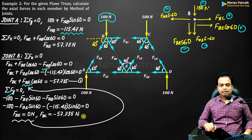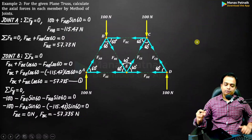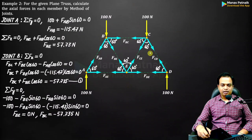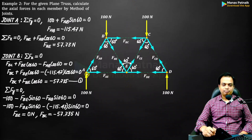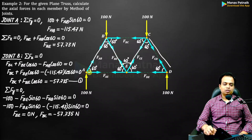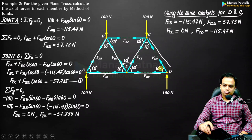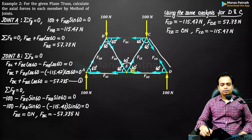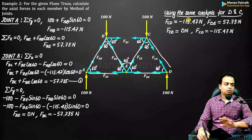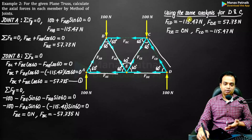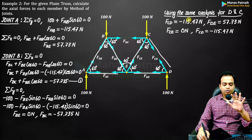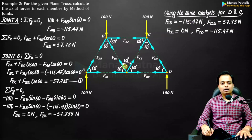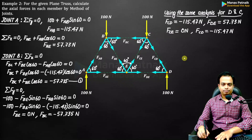Since the figure is symmetrical, the force in member AB equals the force in member CD, the force in member BE equals CE, and the force in member AE equals the force in member DE — simply by symmetry. If you still want, you can do a quick analysis of joint E for verification.